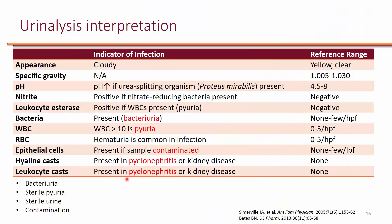Here's what you really need to know when interpreting urinalysis results. Normal urine is supposed to be clear and yellow. If it's cloudy, it can be due to different reasons — either infection, or in patients with kidney disease where things not supposed to be there, such as protein or other chemicals, find their way into the urine making it look cloudy. Cloudy doesn't necessarily mean infection, but it could.